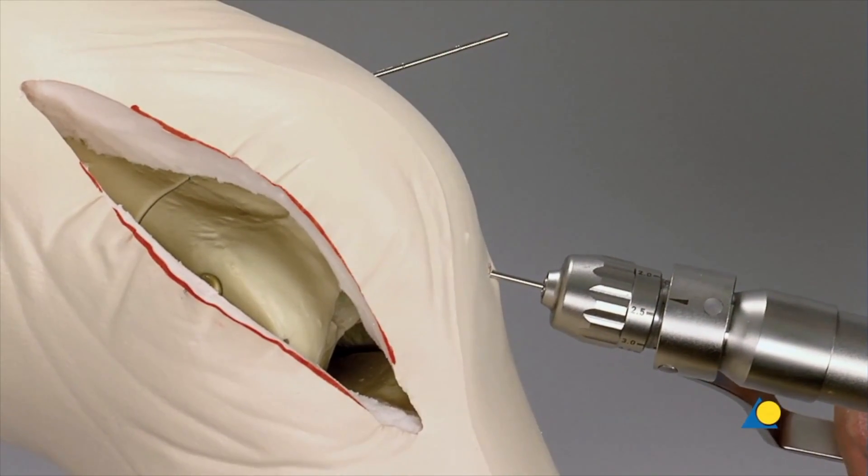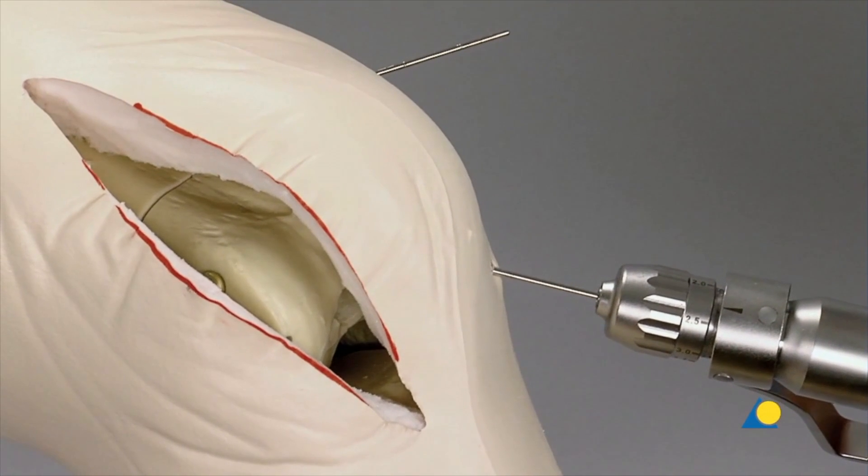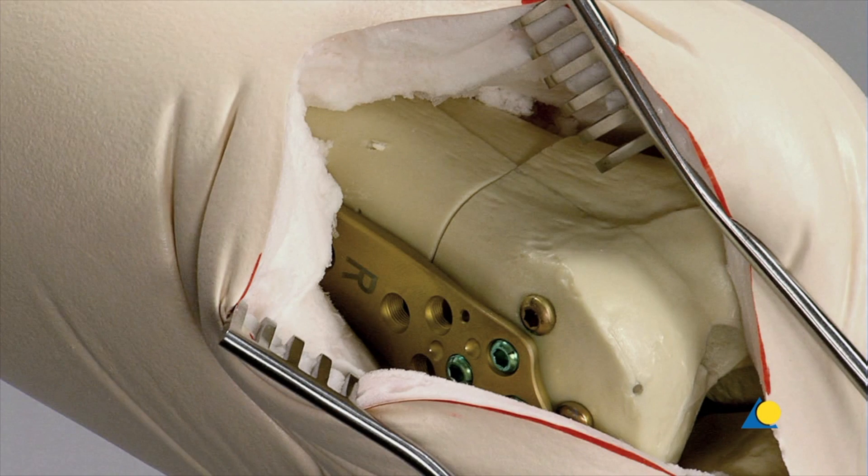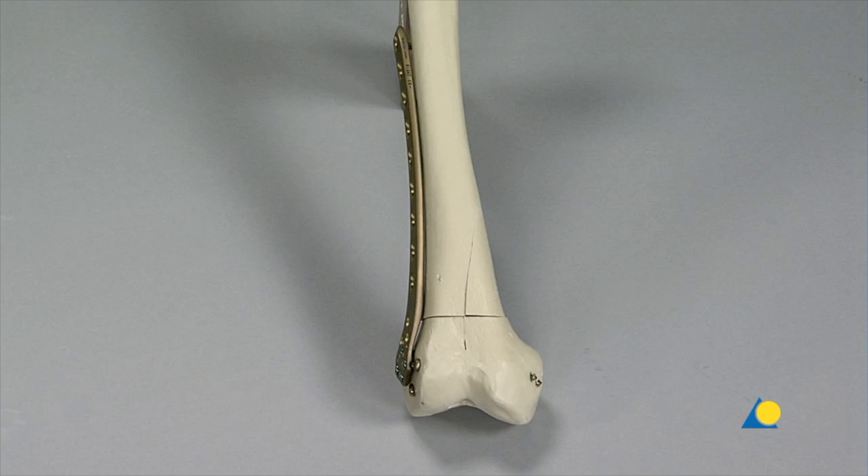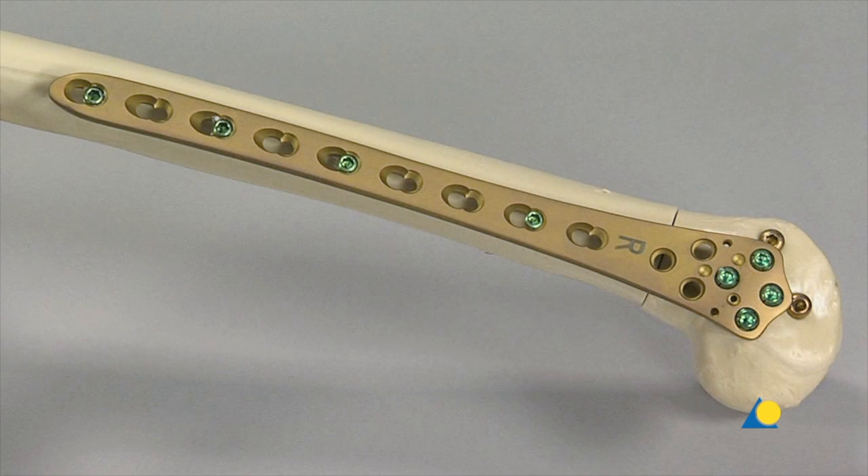The two remaining K wires are removed. It can be seen that the fracture is well reduced and that the plate is correctly placed on the bone. Depending on the length of the femoral shaft fragment, another screw can be inserted.